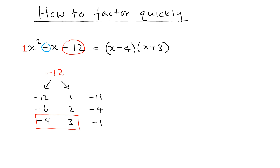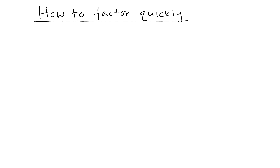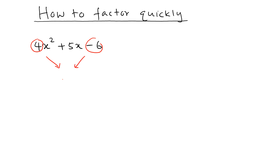Now let's look at a more complicated problem: the factorization of 4x squared plus 5x minus 6. As before, we do the same thing, but this time we're going to multiply the leading coefficient and the constant term — those two numbers are 4 and negative 6 — so when you multiply them you get negative 24.